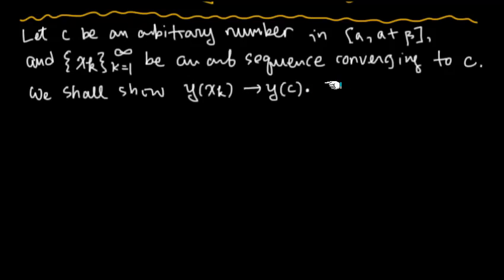This proves the continuity of this function y we're defining. So what we have in practice for this y is this y_n. Instead of looking at y of x_k and y of c, we're going to look at y_n of x_k and y_n of c and see what we can do about it.